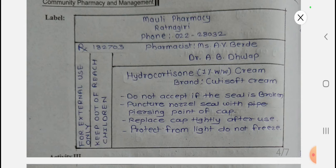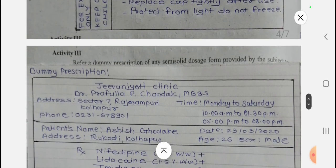The hydrocortisone cream brand name is Qt Soft Cream. Auxiliary label details include: for external use only, keep out of reach of children, do not accept if seal is broken, puncture nozzle seal with piercing point of cap, replace cap tightly after use, protect from light, and do not freeze. This completes Activity Two.